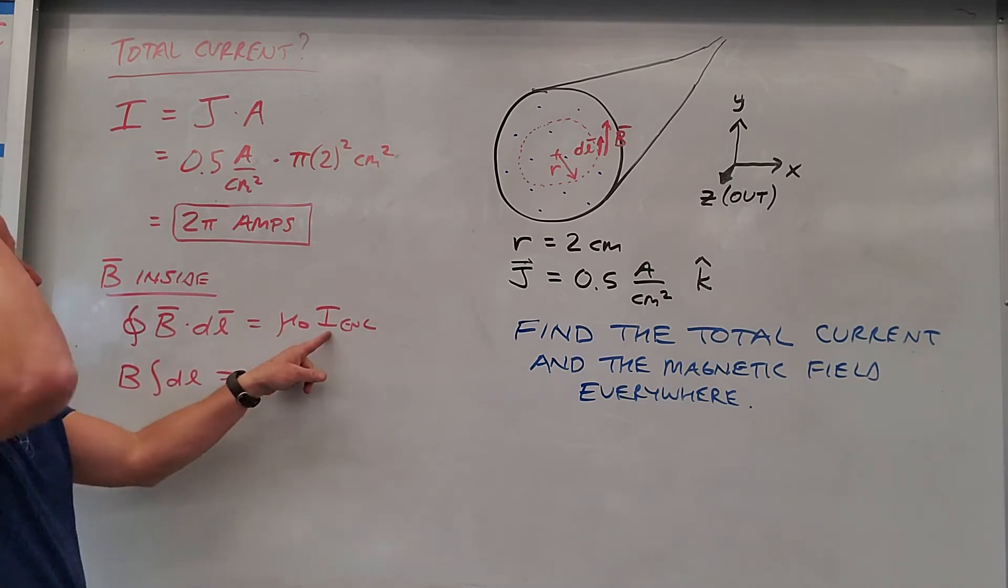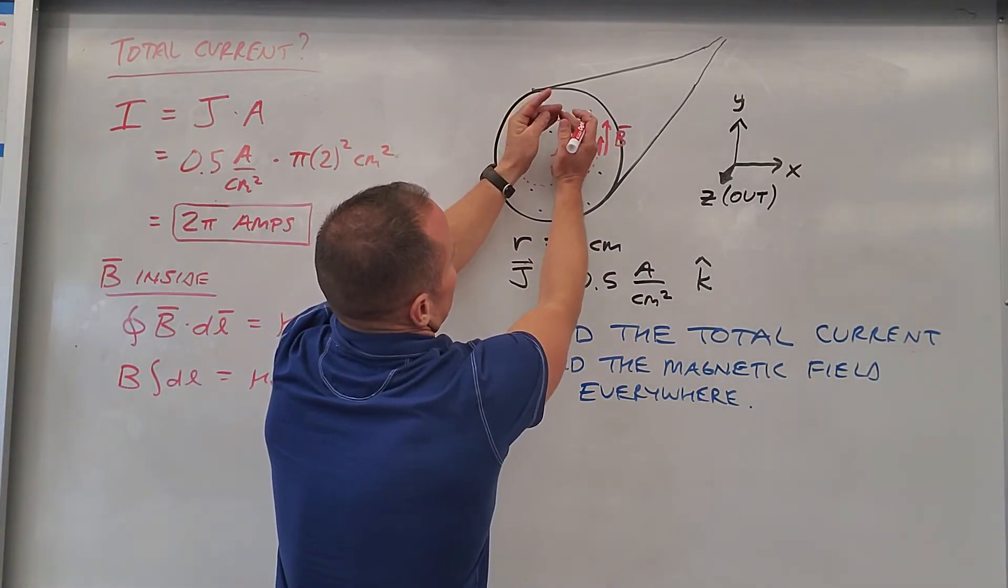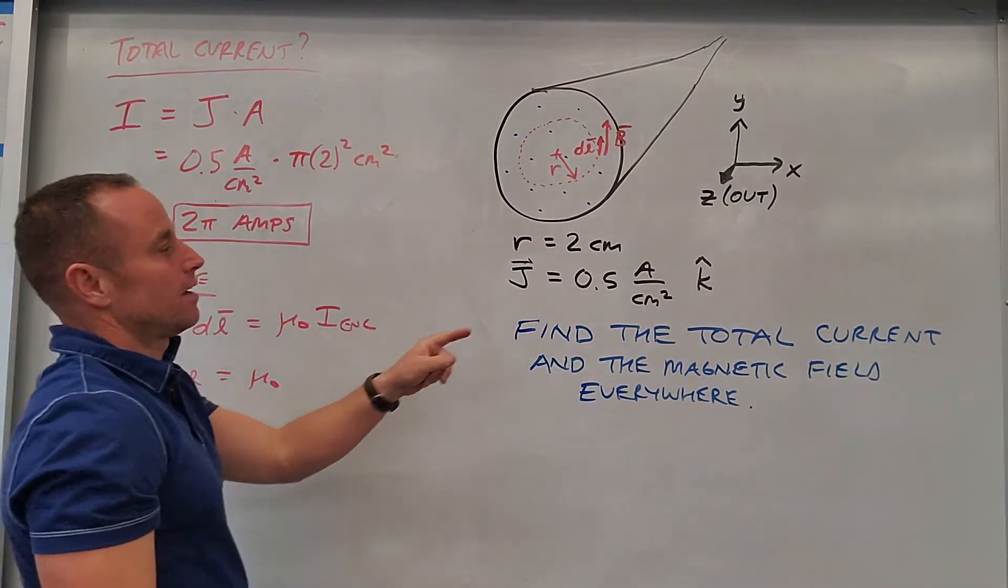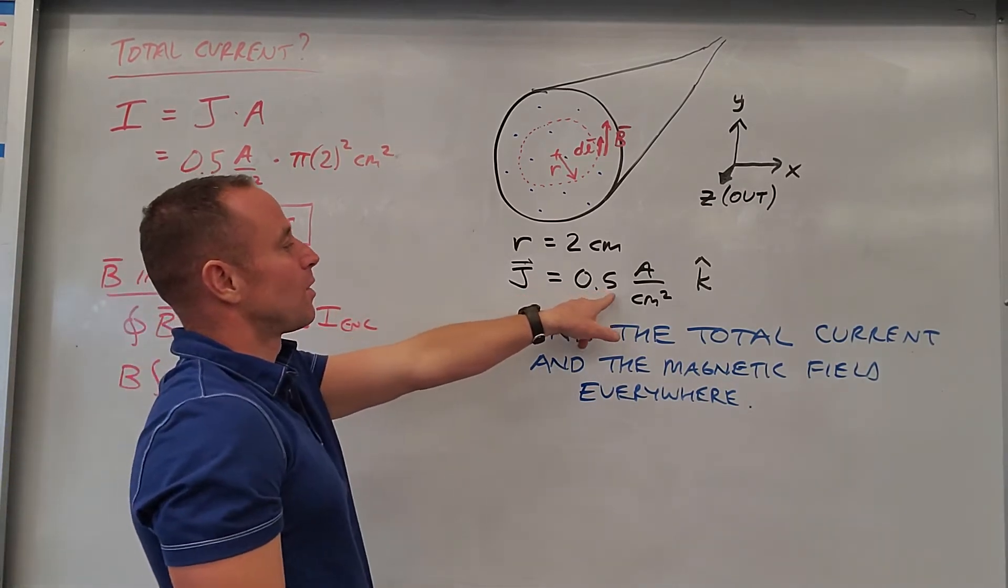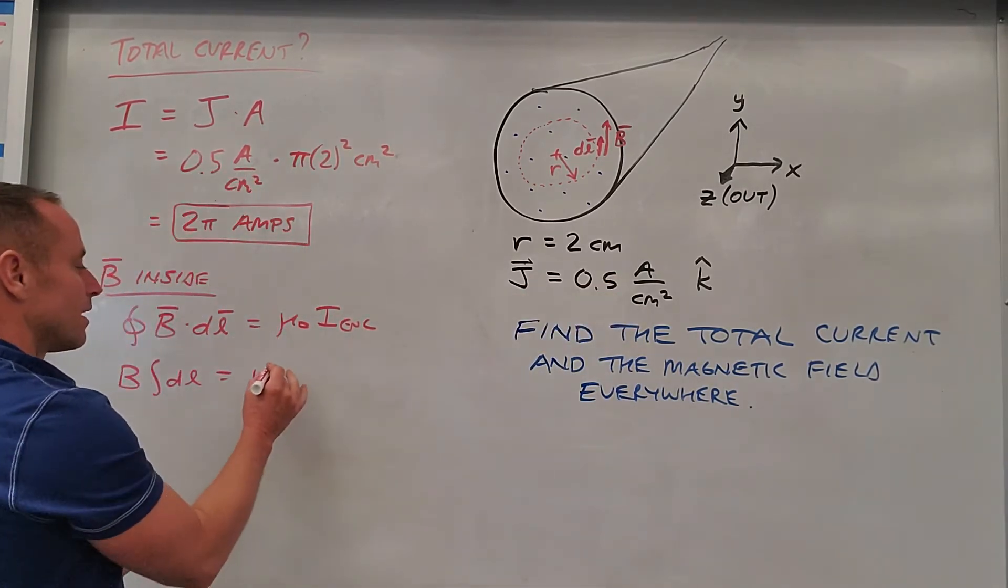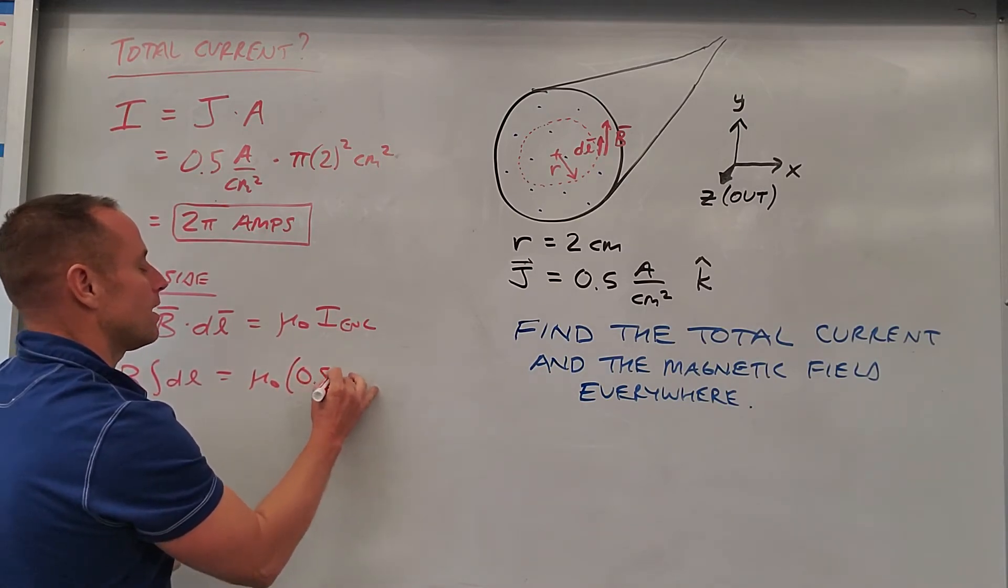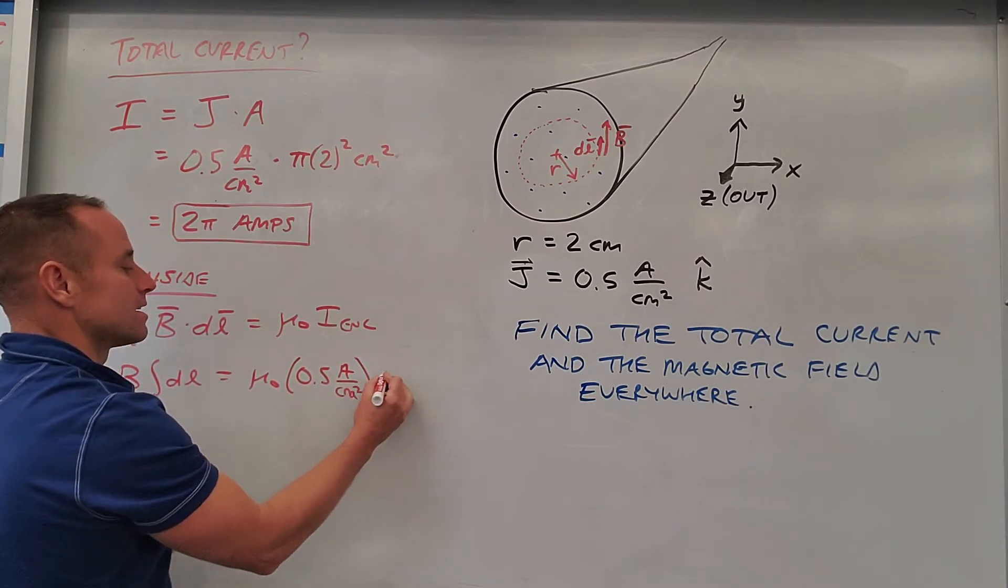now this is - we want to know how much current is inside of this circle. Well, that's just going to be current per area times area. We're given the current per area, it's 0.5 amps per centimeter squared. So here's our current per area.